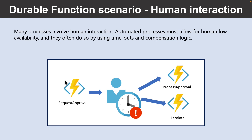Another scenario is Human Interaction. Many processes involve some kind of human interaction. The tricky thing about involving humans in an automated process is that people are not always as highly available and responsive as cloud services. Automated processes must allow for this, and they often do so by using timeouts and compensation logic.